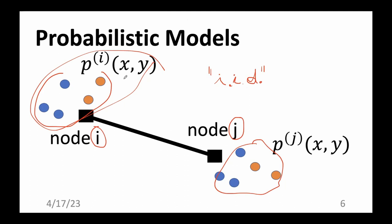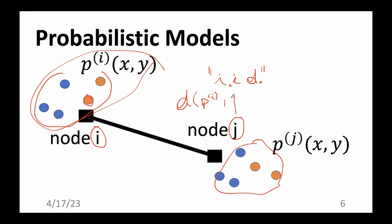Each local data set is made up of IID realizations — we interpret each data point as drawn from a probability distribution that might be different for each node. Learning an empirical graph then means estimating distances between these probability distributions — we want to find a distance measure between the probability distribution at node i and the probability distribution at node j.